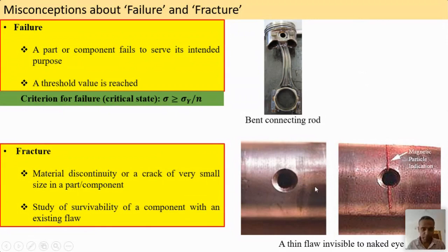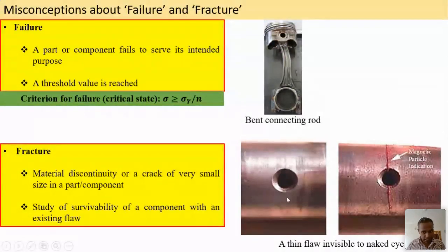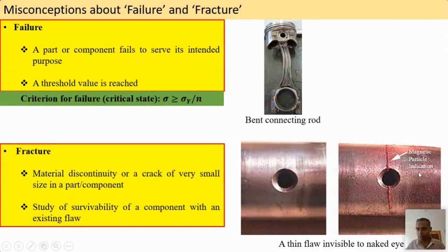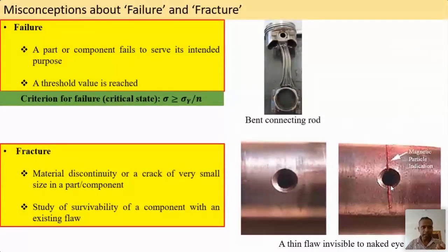Fracture, on the other hand, is about separation of materials creating a new surface. In the bottom picture you see a pipe with a hole — no visible flaw in the naked eye. But when subjected to magnetic particle inspection or ultrasound NDT, a flaw becomes visible indicated by colored particles. These invisible flaws are responsible for fatigue crack growth and failure. Our main goal is to analyze such cases where flaws are present.